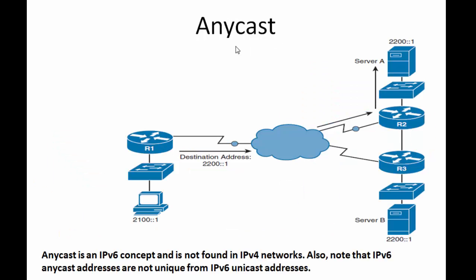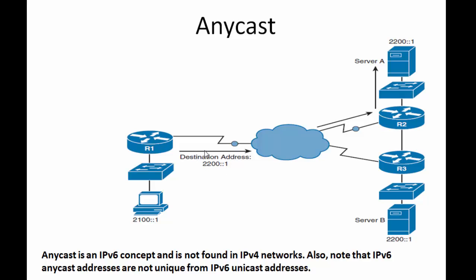The fourth type of transmission is anycast. Anycast is used only in IPv6. With anycast, a single IPv6 address is assigned to multiple devices. Look at this diagram — server A and server B have the same IPv6 address, 2200:1. If this device wants to send a packet to destination address 2200:1, this packet will be received by the nearest device. The nearest device in this diagram is server A, not server B. The nearest is determined by the router — specifically, by router 1's routing table. The better the cost, the nearest. So anycast is one-to-nearest transmission.